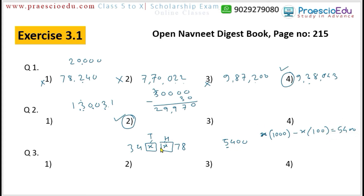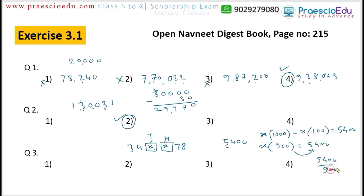Taking X as common: X × (1000 − 100) = 5400, so X × 900 = 5400. Dividing both sides by 900: X = 5400 ÷ 900 = 6. The zeros cancel and 9 × 6 = 54, giving X = 6. So the digit 6 replaces the boxes. Option number 3 is the correct answer.